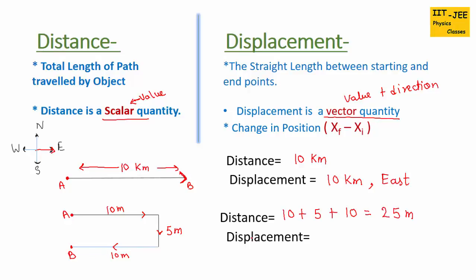So 10 plus 5 plus 10 equals 25 meters. Then we find the displacement. The definition is straight length between starting and end points. Starting point is A and ending point is B, so the straight line between them has a length of 5 meters. Direction is towards the end point — the person displaced from A to B — so the direction is south. Therefore displacement is 5 meters to the south.